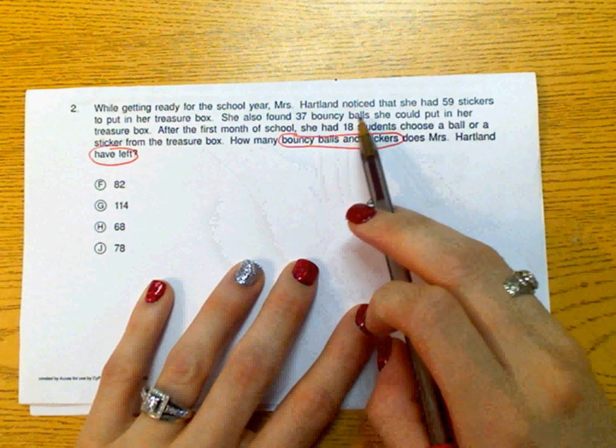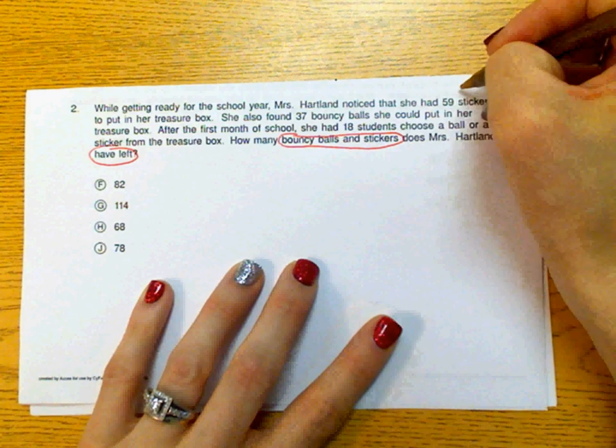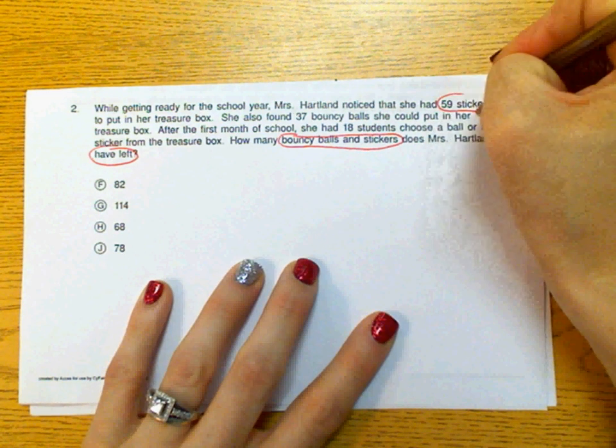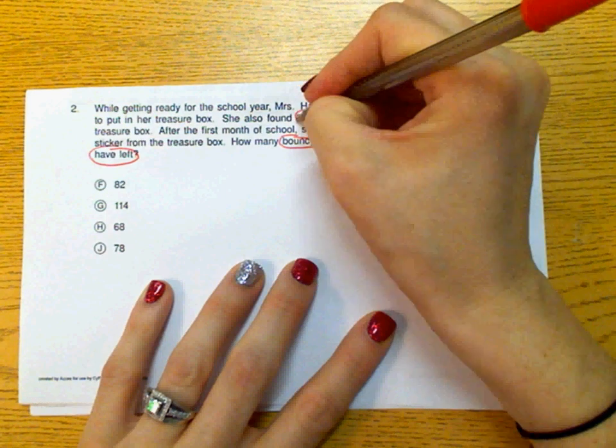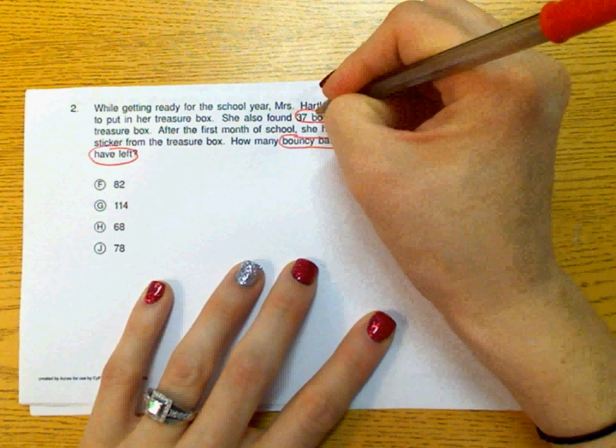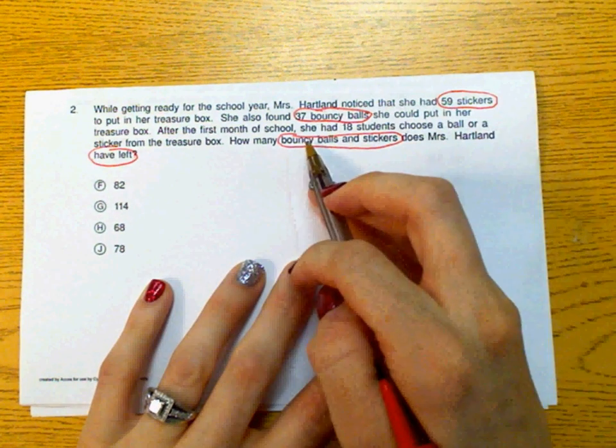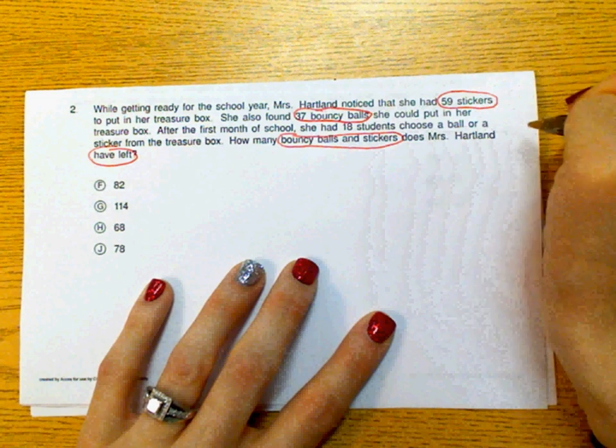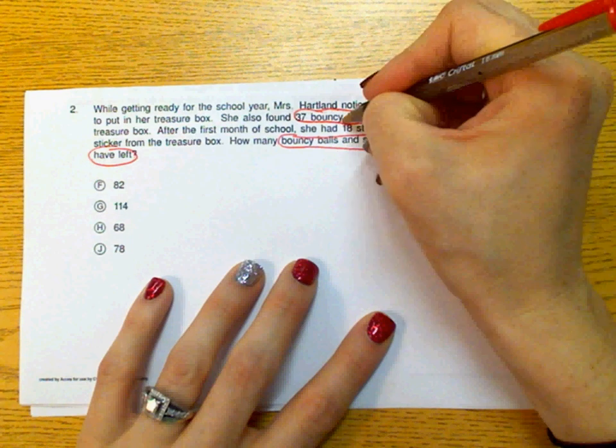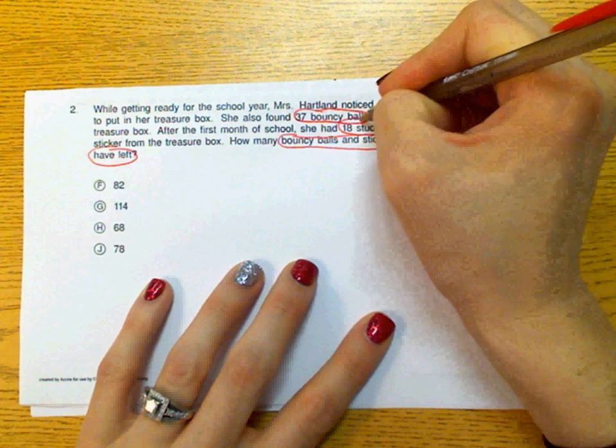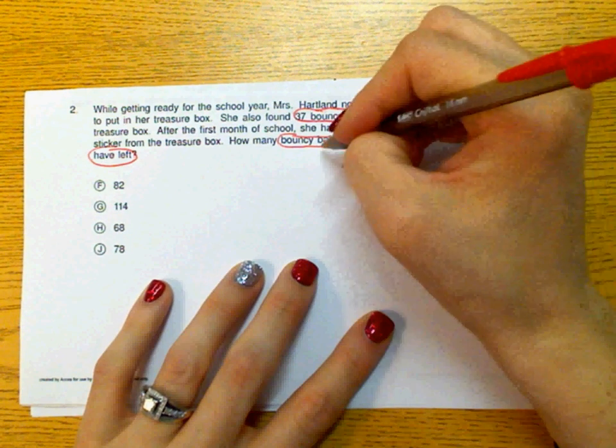We also notice that she has 59 stickers. She also found 37 bouncy balls. After the first month of school, she had 18 students choose a ball or a sticker from the treasure box. So we know that 18 students took one of those bouncy balls or stickers.